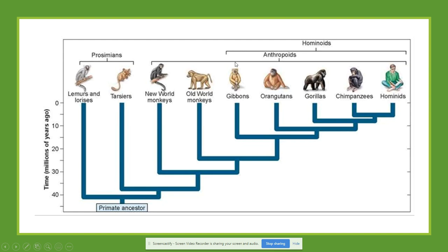The other major group is the anthropoids. The anthropoids include the monkeys, the gibbons — which we call lesser apes — and the great apes: the orangutans, the gorillas, the chimpanzees, and the hominids. All the apes and humans are contained in another group called hominoids.